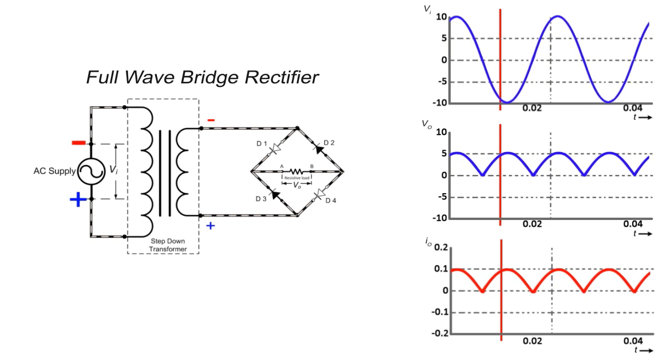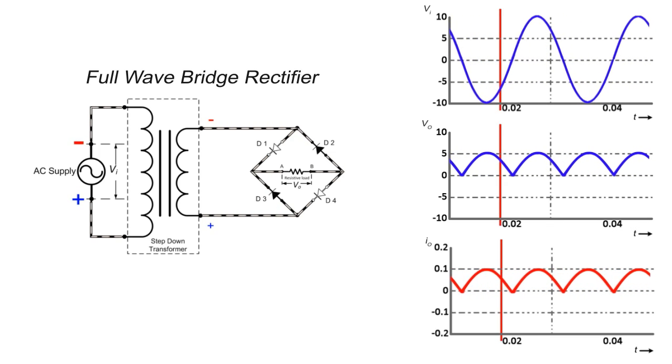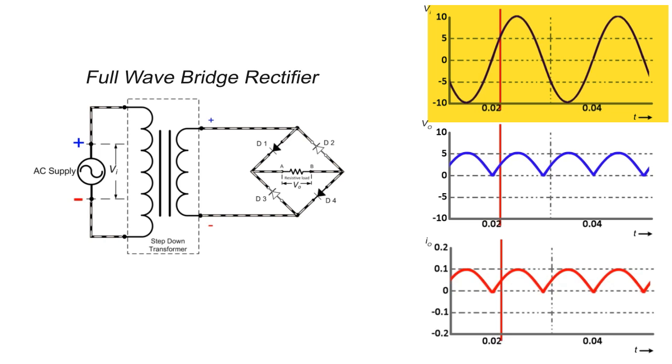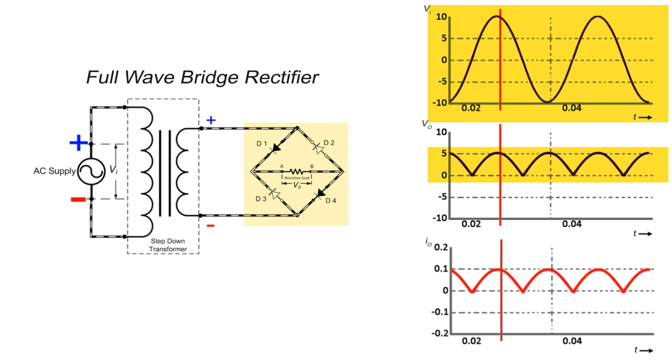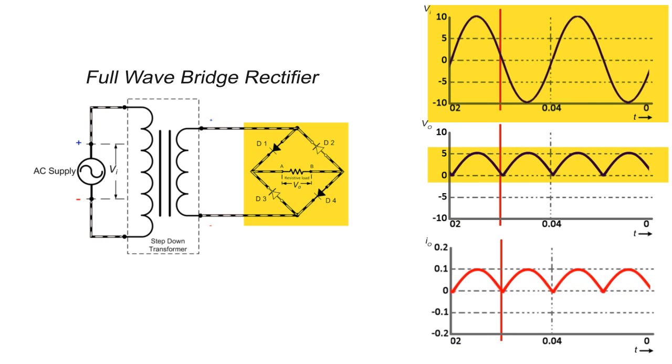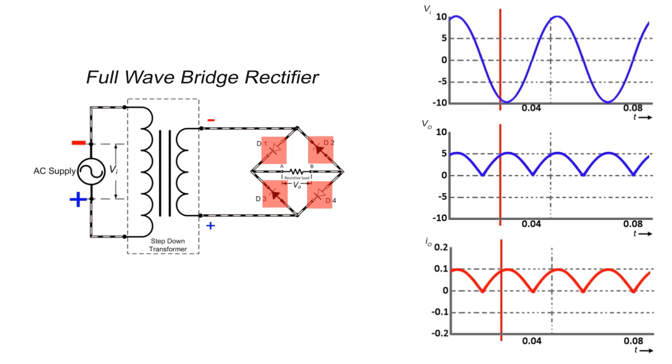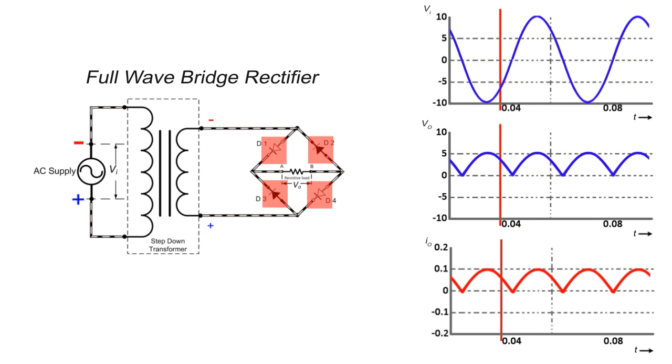As we have already discussed in our previous video, how an AC voltage is transformed into a DC voltage using a bridge circuit. We require at least four diodes to perform full wave rectification.